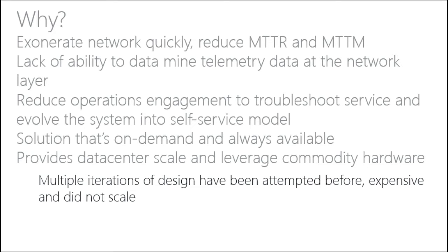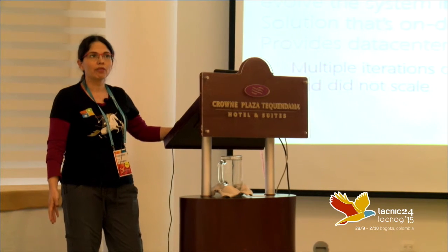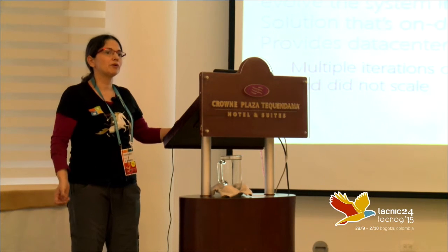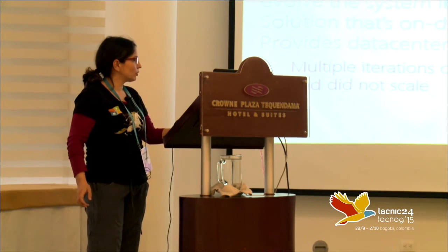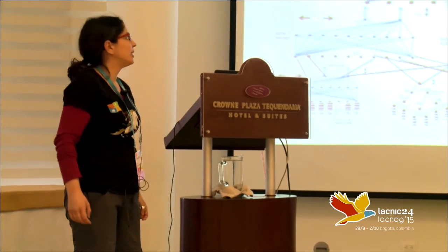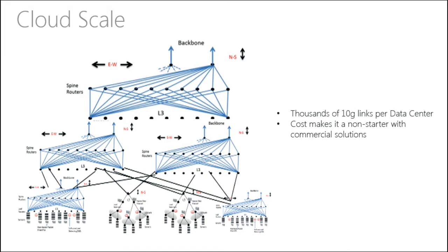We tried to design this solution many times, many iterations. We are right now on the fourth iteration, which I am not presenting here — this is the third one, but it's still a very good model. This is how a cloud data center looks — we designed a clos architecture where you have a full mesh between lower layers and upper layers, resulting in thousands of links. If you were to tap all of that and monitor every one of those links with deep packet inspection, the cost is very prohibitive. We tried with commercial solutions — it was a non-starter.